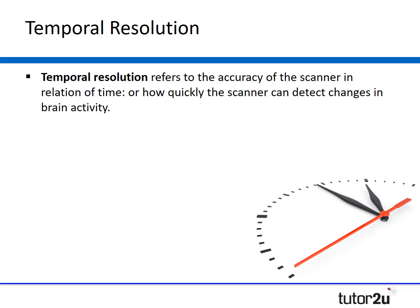Temporal resolution refers to how quickly the scanner can detect brain activity. fMRI scanners have a temporal resolution of between one and four seconds, which is quite delayed. In comparison, EEG and ERP measure brain activity nearly every millisecond — especially between one and ten milliseconds — giving them a much better temporal resolution than fMRI.